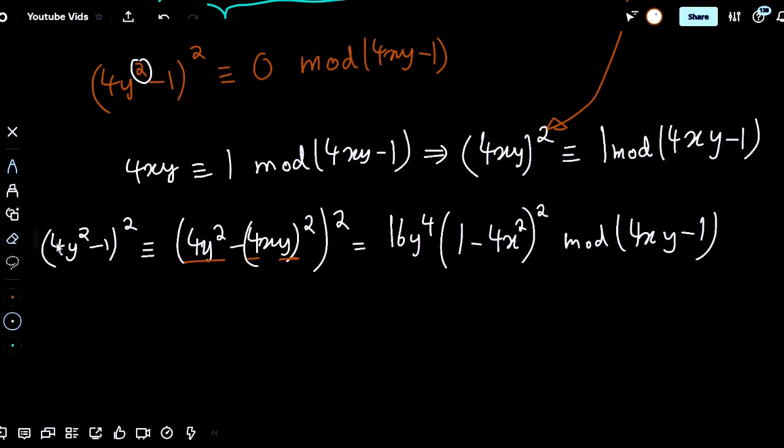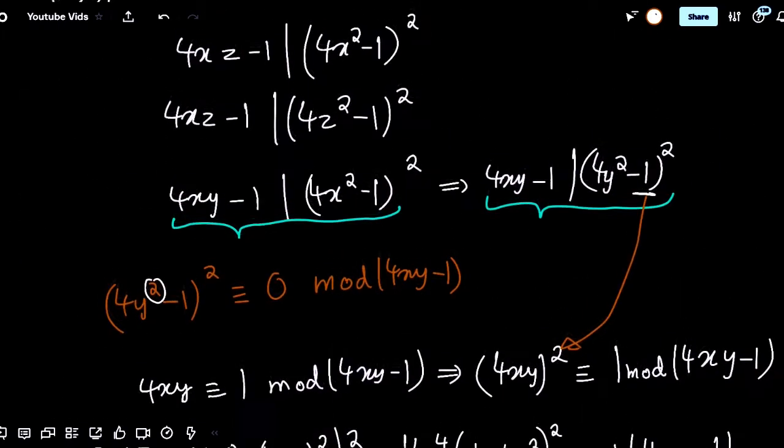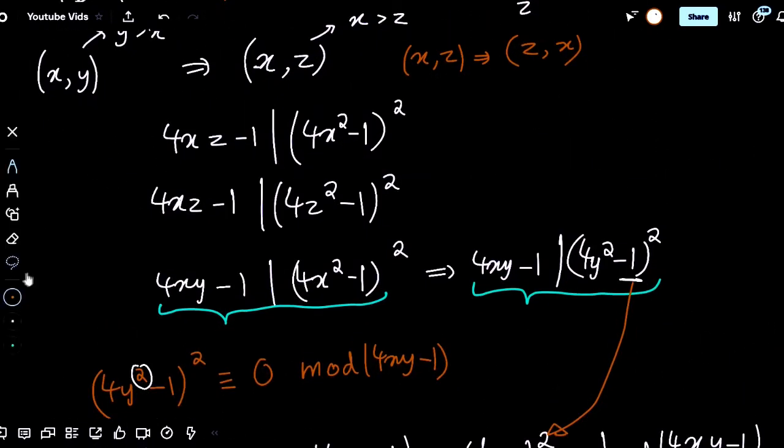So, I can factor out a negative from this and I can say that this is congruent to 4x squared minus 1 whole squared modulo 4xy minus 1. But wait, this is what we initially had and we know that it's congruent to 0 mod 4xy minus 1 because of this.